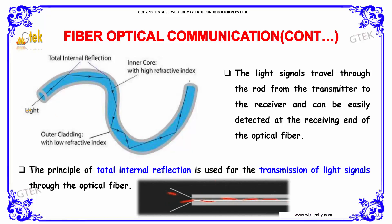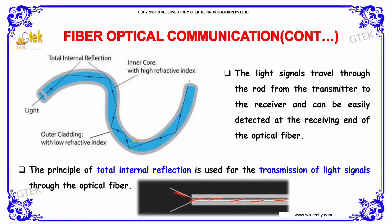The light signals travel through the rod from the transmitter to the receiver and can be easily detected at the receiving end of the optical fiber. The principle of total internal reflection is used for the transmission of light signals through the optical fiber.